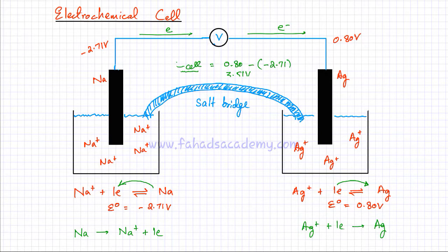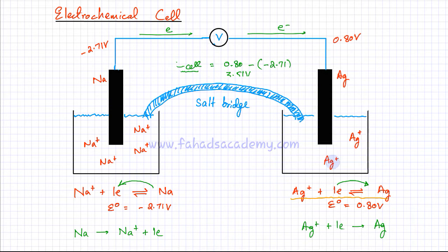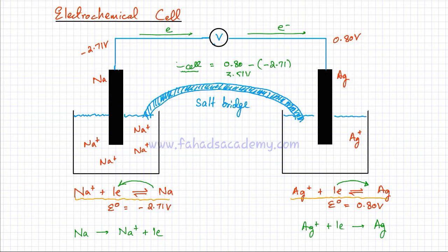Now I'm going to explain the purpose of the salt bridge, because without the salt bridge this entire passage of electricity would not be possible. What a salt bridge does: if you look at the silver electrode reaction going in the forward direction, your silver ions are getting converted into silver atoms. So all the silver ions in the solution are being converted, which means the amount of silver ions in the solution are going to be reduced. On the other side, the reverse reaction is occurring — sodium atoms are getting converted into sodium ions, so the solution is going to contain more and more sodium ions.